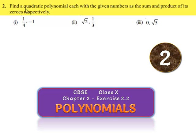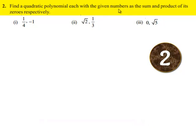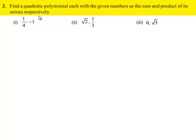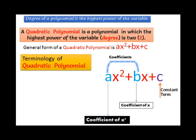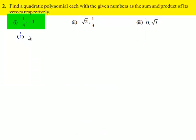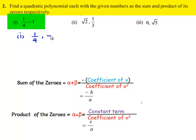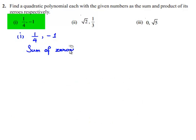Coming to the second problem: find a quadratic polynomial with the given numbers as the product and sum of its zeros respectively. The first one given to us is 1/4 and minus 1. So the sum of the zeros of the polynomial is equal to 1/4 and their product is equal to minus 1.